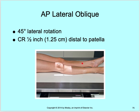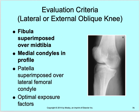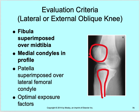For the AP lateral oblique, you're now rotating the leg 45 degrees laterally — it's easier for a patient to rotate this way than medially. Still use that half inch distal to the patella for the central ray. The evaluation criteria: the fibula is superimposed over the mid-tibia, your patella is now lateral on the lateral condyle, the medial condyles are in profile, and the patella is superimposed over the lateral femoral condyle. Then optimal exposure factors.